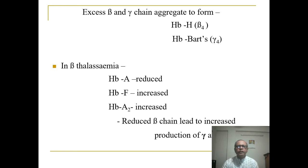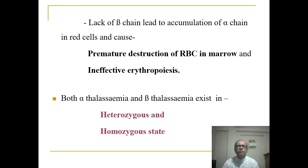Excess beta and gamma chains aggregate to form hemoglobin H (beta-4) and hemoglobin Barts (gamma-4). In beta-thalassemia, hemoglobin A is reduced, hemoglobin F is increased, and hemoglobin A2 is increased. This is because there is reduced beta chain synthesis, which leads to increased production of gamma and delta chains. Lack of beta chains leads to accumulation of alpha chains in red cells, causing premature destruction of red blood cells in the bone marrow.